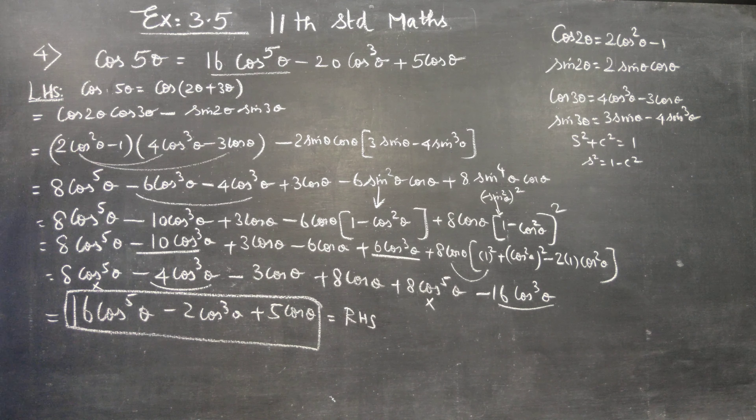The main components of this sum are the multiple angle formulas: cos2θ, sin2θ, cos3θ, sin3θ, and the identity sin²θ = 1 - cos²θ. Note that this is not the (a - b)² algebraic form. Thank you.